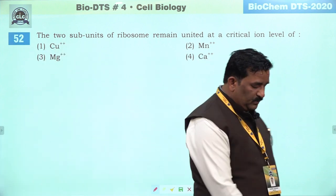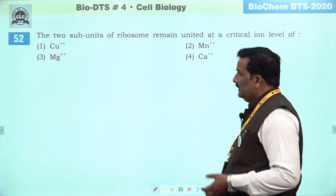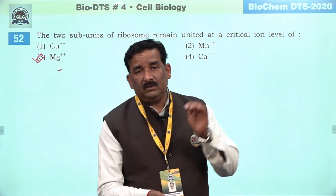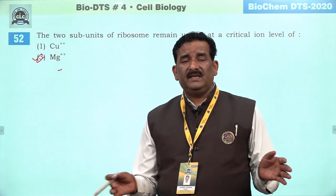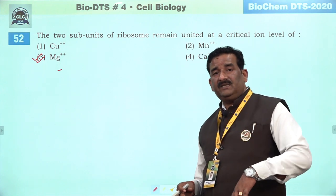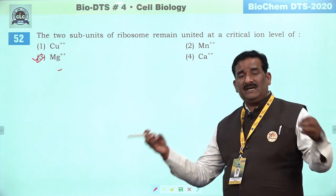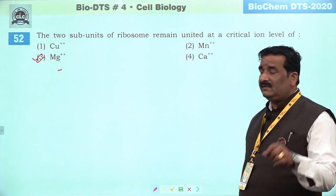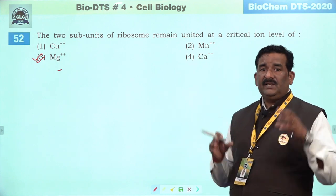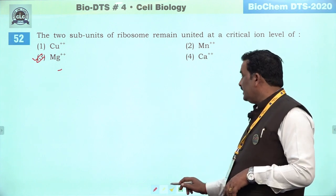Next question: the two subunits of ribosome remain united at a critical ion level — toh woh Mg hai. Mg ka concentration 0.001 is necessary for assembling of both subunits of ribosome. If concentration decreases from that concentration, then both are separate from each other. If concentration of Mg increases 10 times more, then both ribosomes are attached with subunit and they convert into dimers. Iska matlab Mg ka jo concentration hai woh responsible hota hai kisi bhi ribosome ke structure ko maintain karne ke liye.